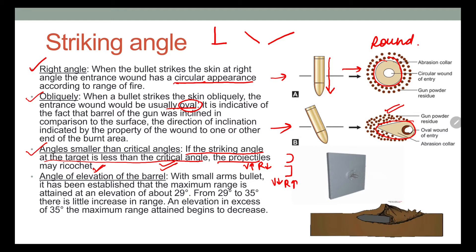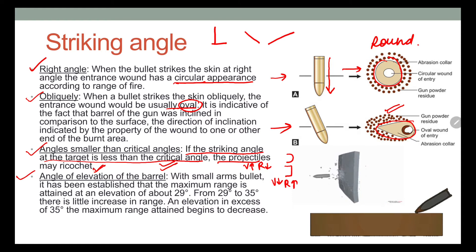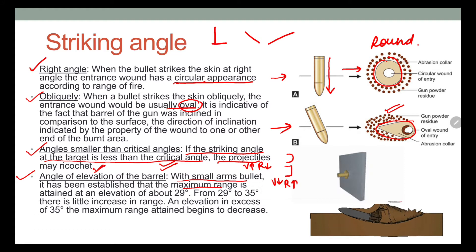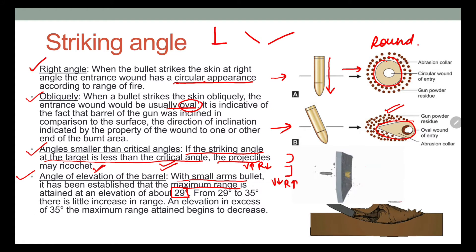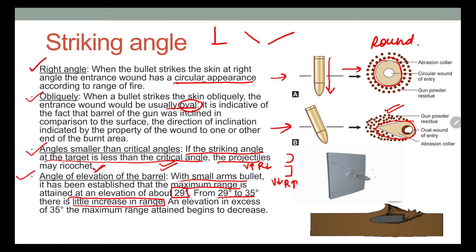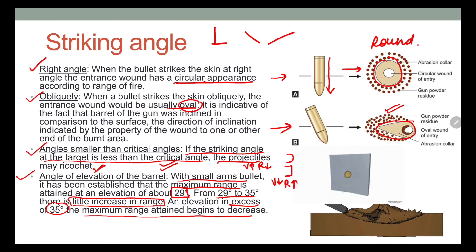Then comes the angle of elevation of the barrel. With small arm bullets, the maximum range is generally obtained at a 29-degree angle. In the range of 29 to 35 degrees there may be a slight increase in range, but if the angle exceeds 35 degrees, the range starts to decrease.